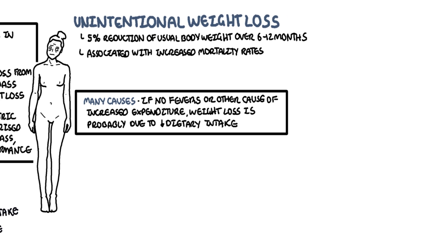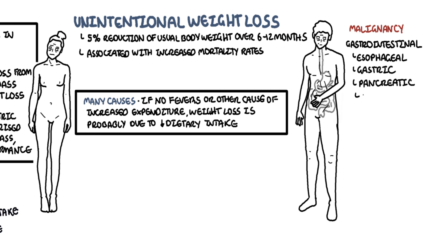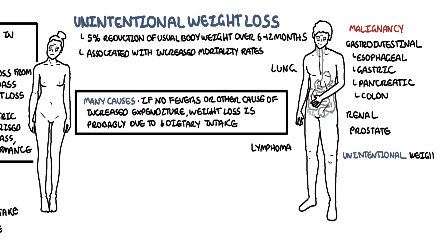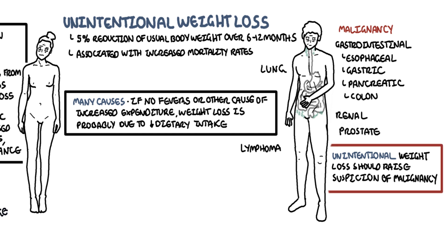An important cause to know is malignancy. This can be any malignancy such as from the gastrointestinal system — esophagus, gastric cancer, pancreatic cancer, or colorectal cancer — as well as renal cancer, prostate cancer, lung cancer, or hematological malignancy such as lymphoma. Unintentional weight loss should always raise suspicion of malignancy, especially in the elderly. Malignancy causes weight loss either by suppressing appetite due to discomfort or pain, or because it steals the nutrients that the healthy body otherwise needs.